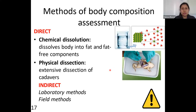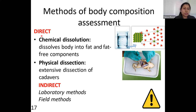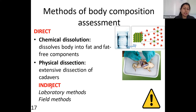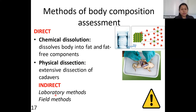Now let's go to the assessment methods — how body composition can be assessed. There are two main categories: direct and indirect methods. The direct method is further divided into chemical dissolution and physical dissection. The indirect method is divided into laboratory methods and field methods, meaning body composition can be evaluated indirectly either in a laboratory or in the field.